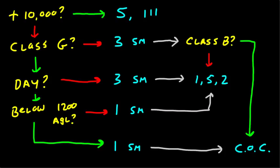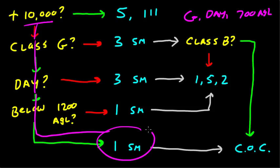Let's do it one more time. What if you're in class golf during the day at 700 AGL. Now, are you above 10,000? No. Class golf? Yes. During the day? Yes. Below 1,200 AGL? Well, yes. 1 mile. Clear clouds. Hey! Pretty cool. It works.